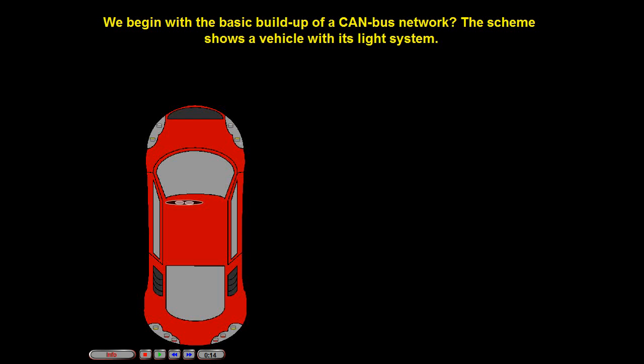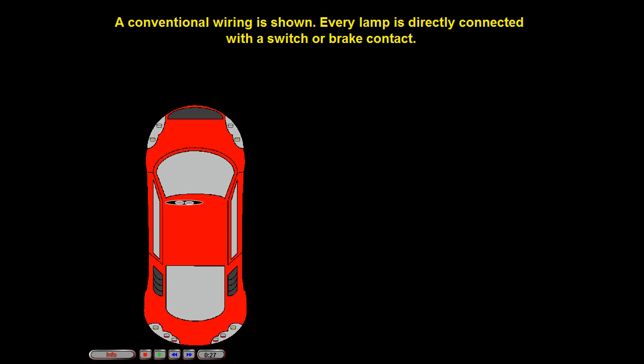We begin with the basic build-up of a CAN-BUS network. The scheme shows a vehicle with its light system. A conventional wiring is shown, where every lamp is directly connected with a switch or brake contact.